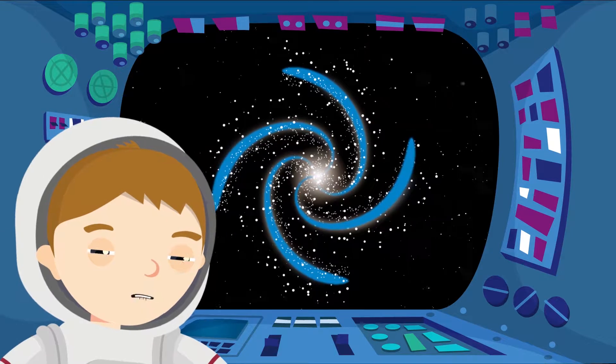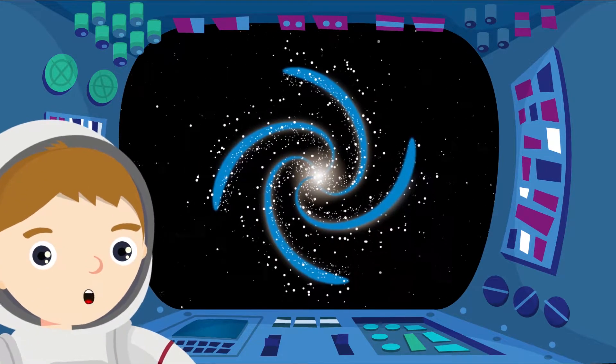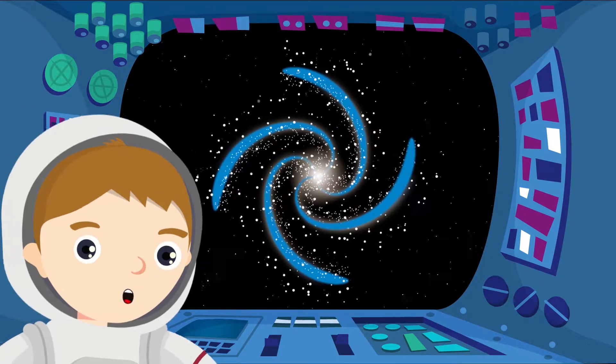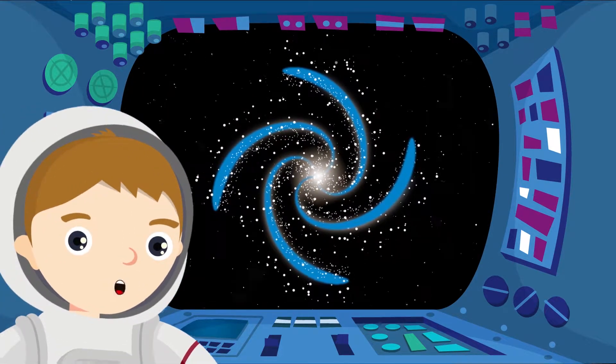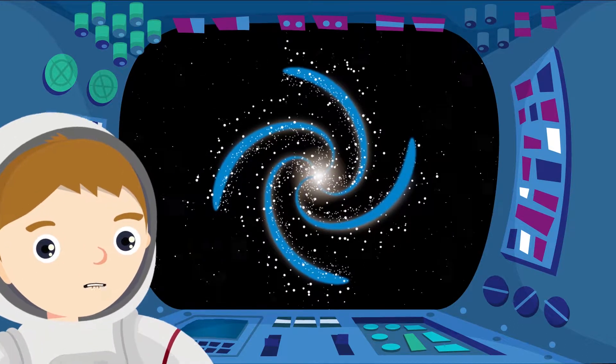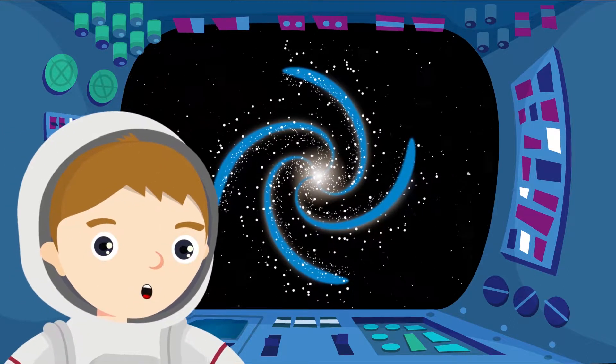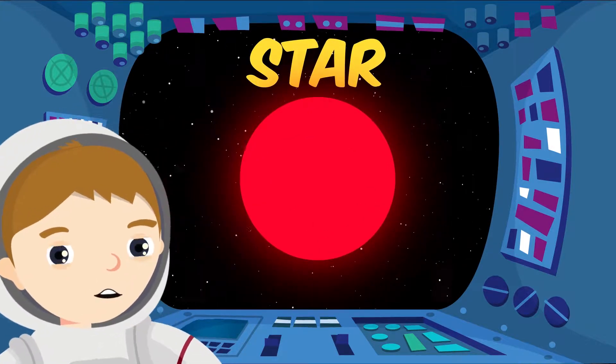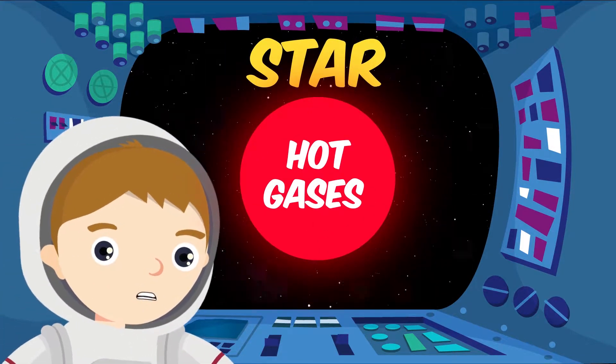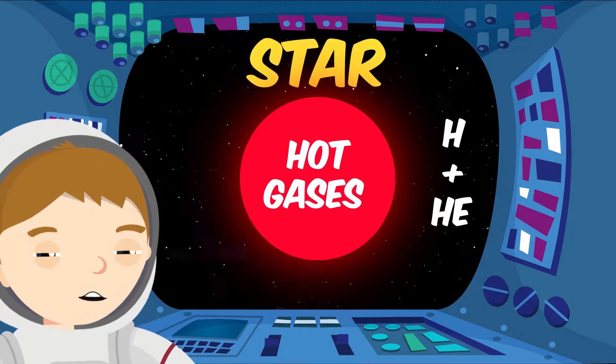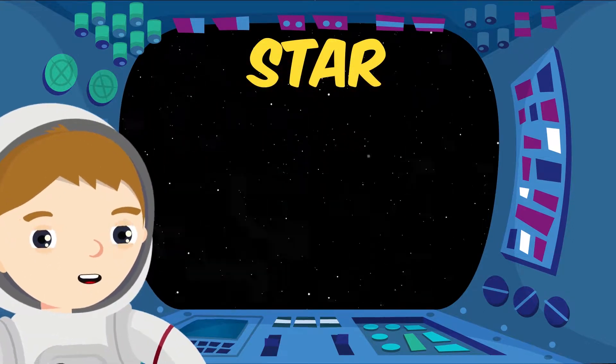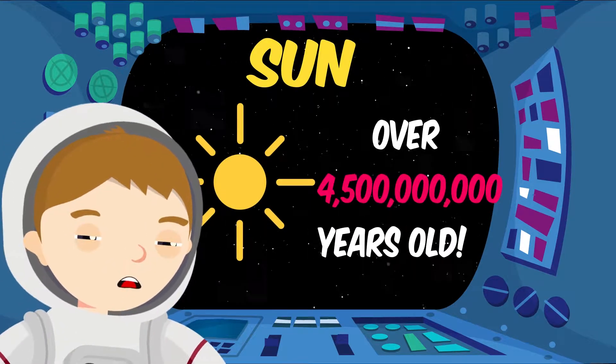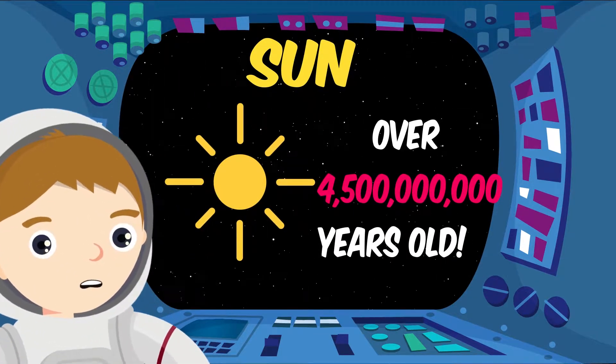Let's stop here for a moment and have a good look around. Welcome to our galaxy, the Milky Way. First we will look out for some stars. Now be careful, these will be very bright. Stars are giant spheres of super hot gas made up mostly of hydrogen and helium. Our sun is a star which is over 4.5 billion years old.